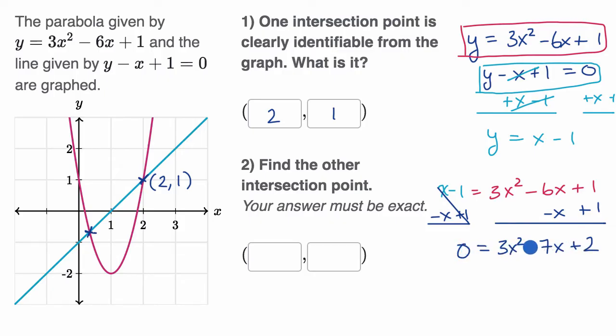Now, we could try to factor this. Let's see, is there an obvious way to factor it? Can I think of two numbers, a times b, that's equal to the product of three and two, three times two? If this looks unfamiliar, you can review factoring by grouping. And can I think of those same two, a plus b, where it's going to be equal to negative seven?